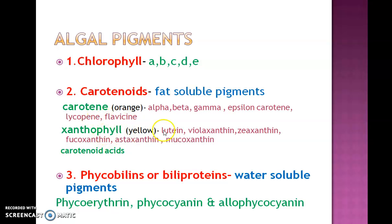Carotene is of different types: alpha, beta, gamma, and epsilon carotene, like copine and flavicine. Xanthophyll is of different types: lutein, pylosanthine, zeaxanthin, fucoxanthin, astaxanthin, and mucoxanthin.